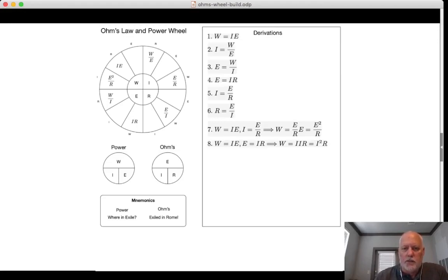Combining those equations by substituting in IR for the value of E, we get W is equal to I times I times R, which is nothing more than I squared times R. And we plug that into the power wheel.